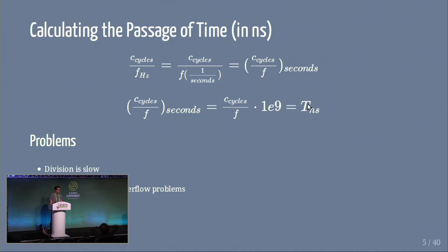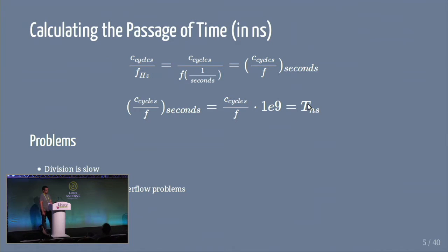The only thing is that if you want to implement this in the kernel, there are a few problems. Division is slow on CPUs usually, and we can't really do floating-point math in the kernel — at least not in the timekeeping area. And we might have precision and overflow issues because if you're doing integer math, you can't just divide and then lose all the precision.